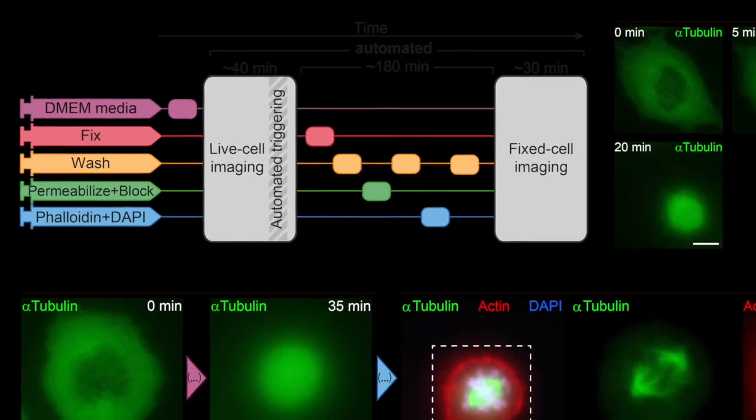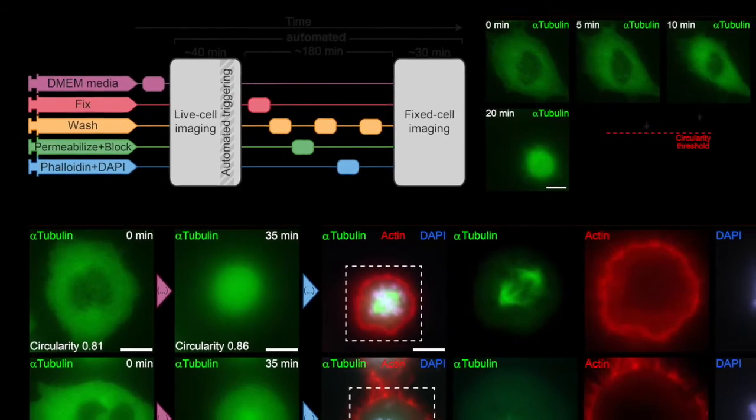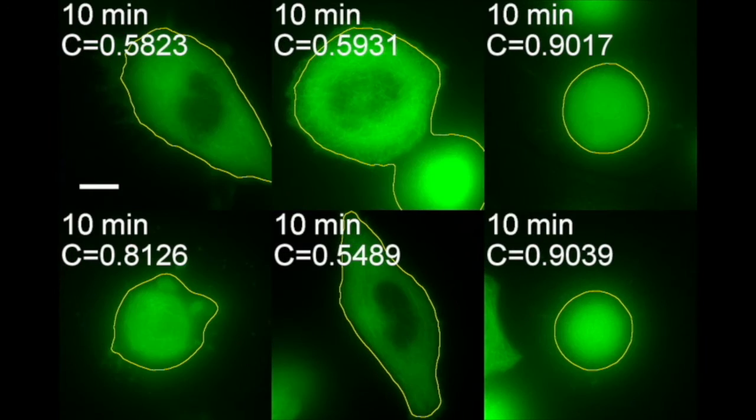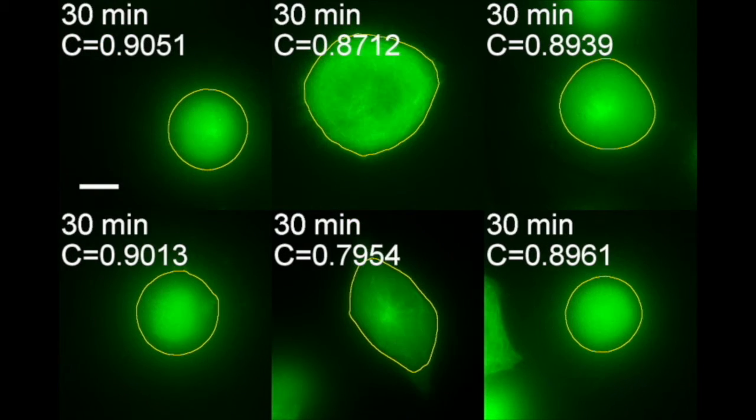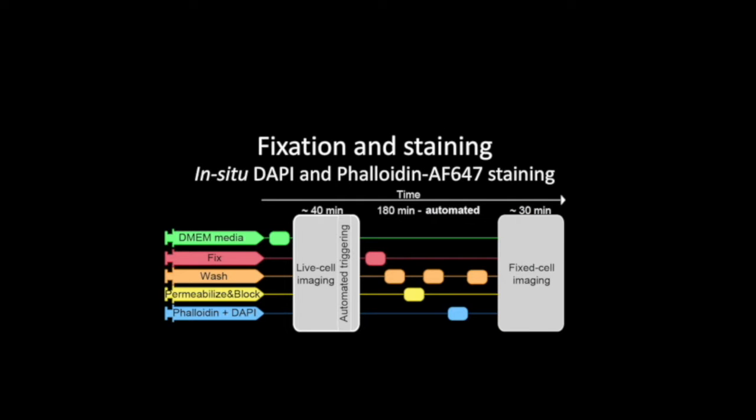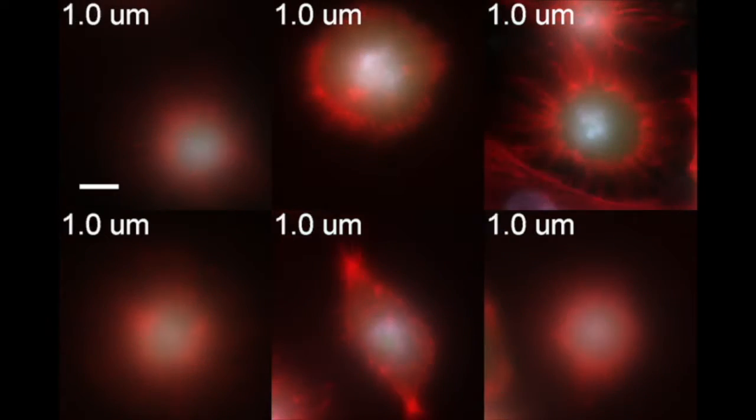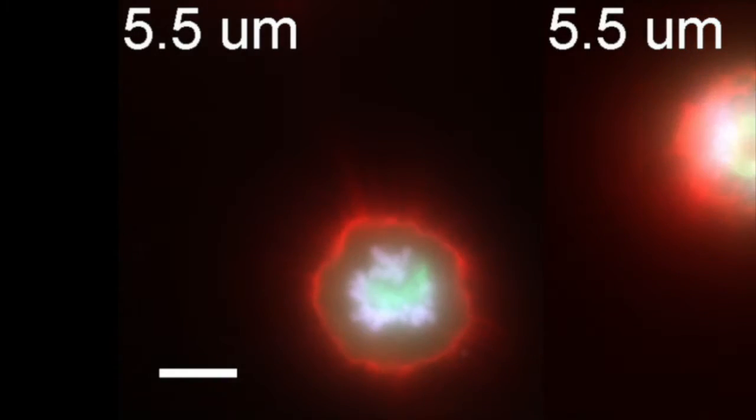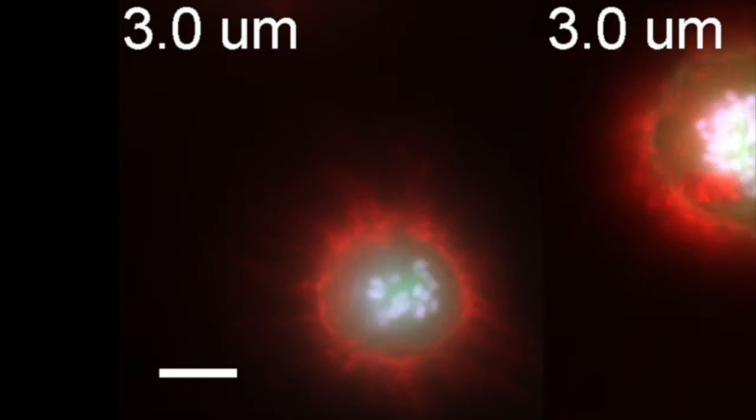We then extended these experiments to show that it's possible to do unsupervised control of the microscope and fluidics. Here, a specifically designed pattern recognition algorithm searches for well-defined morphological features that trigger fixation and labeling. This allows us to analyze a large number of cells, all precisely fixed at the same stage of the cell cycle.